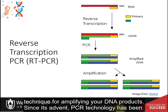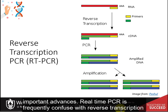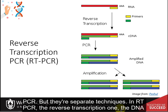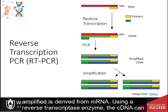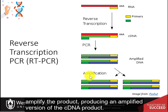Since its advent, PCR technology has been creatively expanded upon, and reverse transcription PCR, or RT-PCR, is one of the most important advances. In RT-PCR, the DNA amplified is derived from messenger RNA. Using a reverse transcriptase enzyme, cDNA can then be produced. This double-stranded product can then be used in PCR reactions to amplify the product, producing an amplified version of the cDNA.